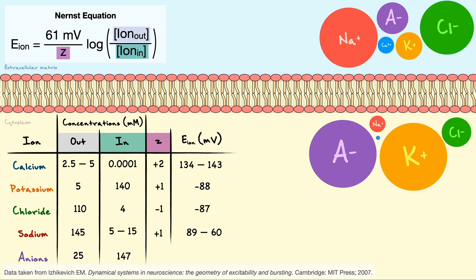You will also notice that I have added anions to the table. In this case, anions are negatively charged amino acids and proteins that influence the net charge of the system, or in other words the membrane potential, but since they cannot move directly to the membrane, we will not consider their equilibrium potential.